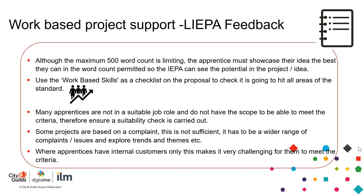The project proposal has a maximum of 500 words — it was previously 250, now increased to 500. Within that proposal, the apprentice must showcase their idea as best they can. The IEPA can see the potential in the project idea, and if it doesn't have the potential to map across to all the KSBs, it will be rejected. Make sure you use the work-based skills as a checklist on the proposal.